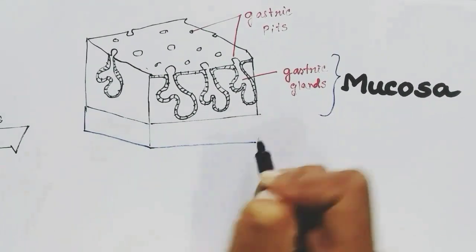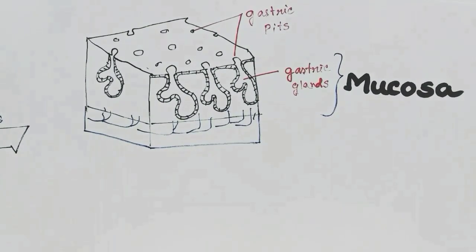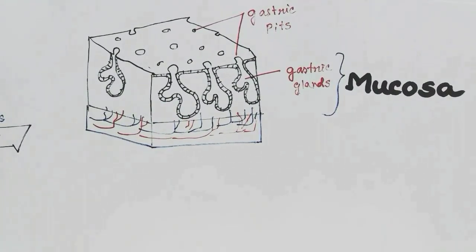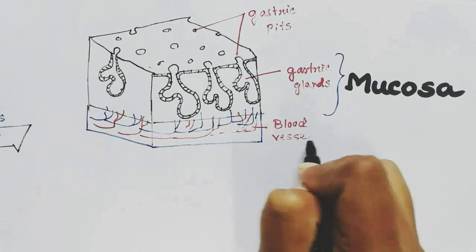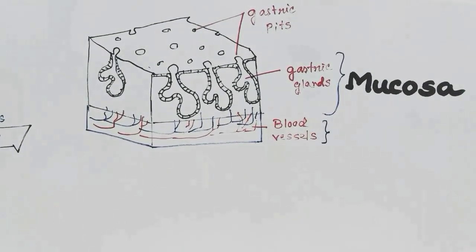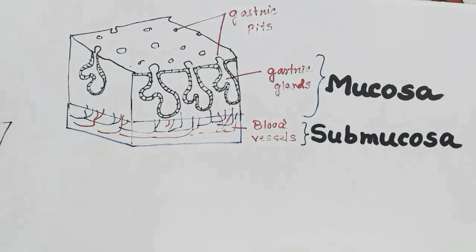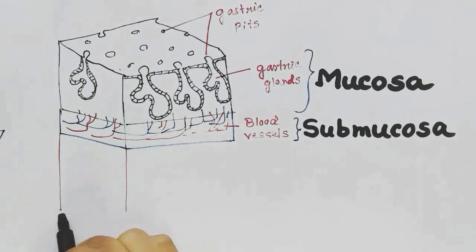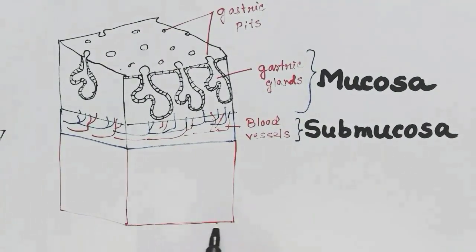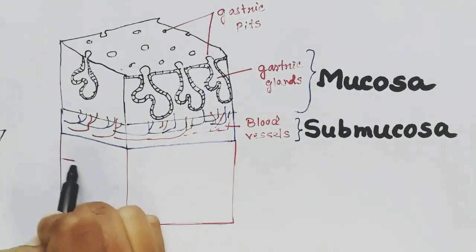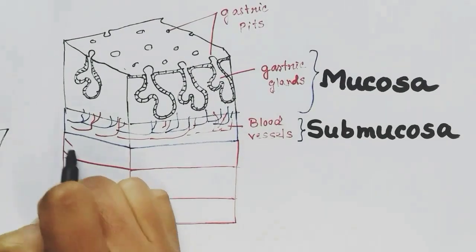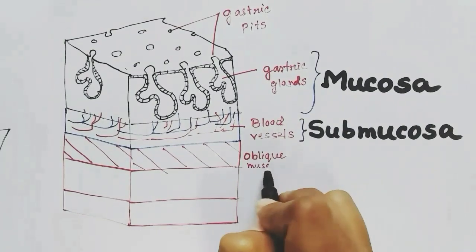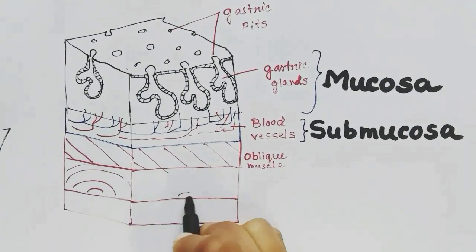The layer next to the mucosa is the submucosal layer, where blood supply is present along with some connective tissues. The next layer after the submucosa is the muscle layer, that is a smooth muscle layer. There are three smooth muscle layers in the stomach: the first is the oblique muscle, the second is the circular muscle layer.